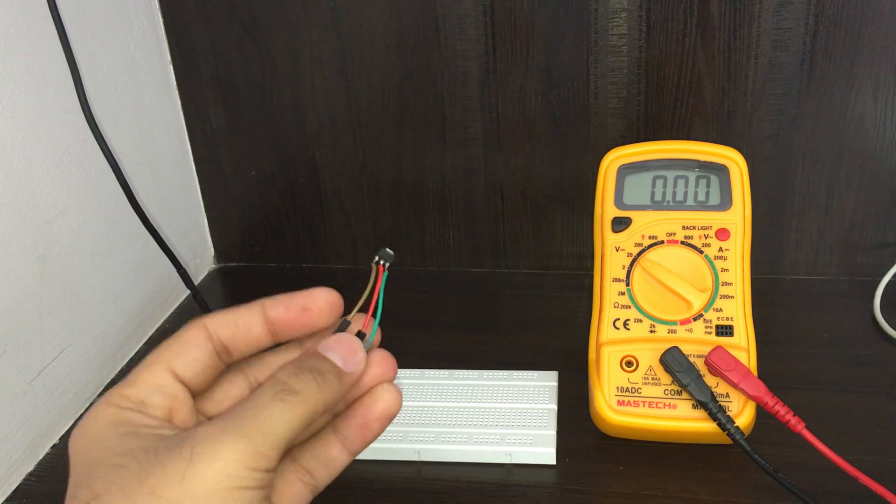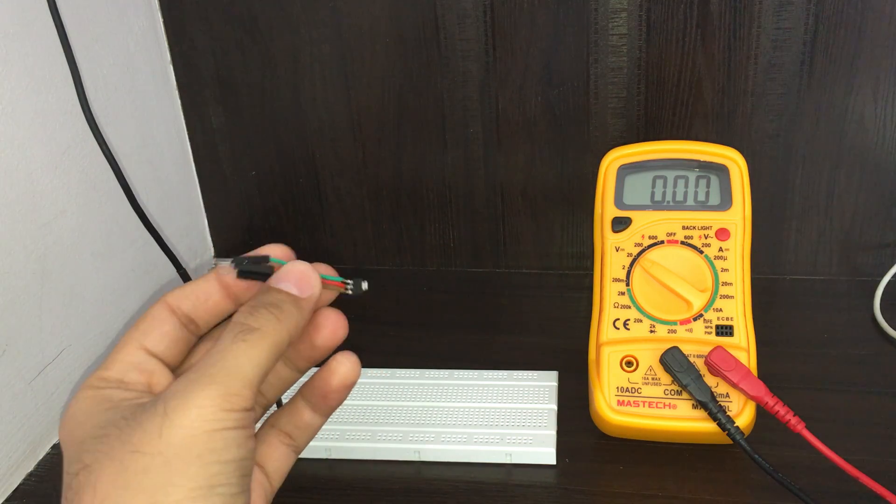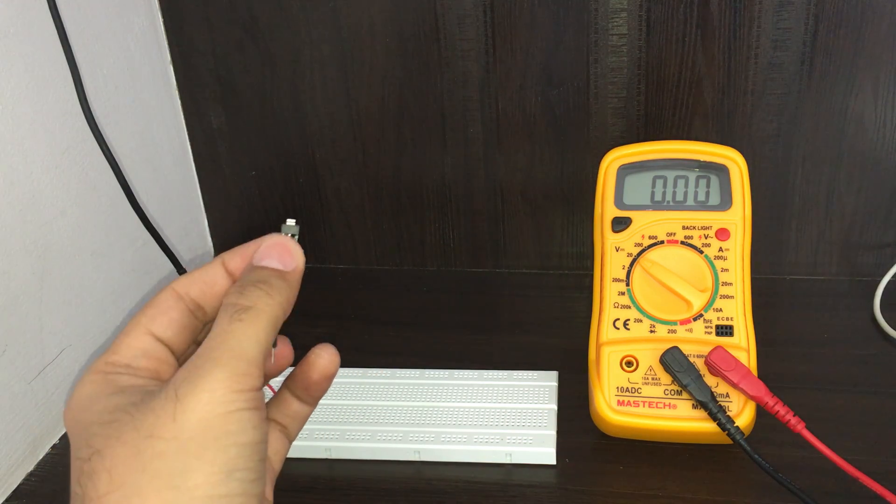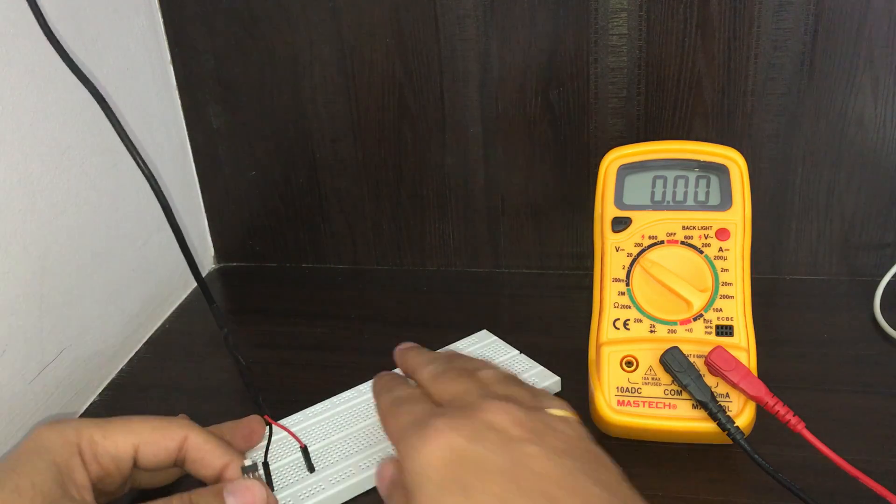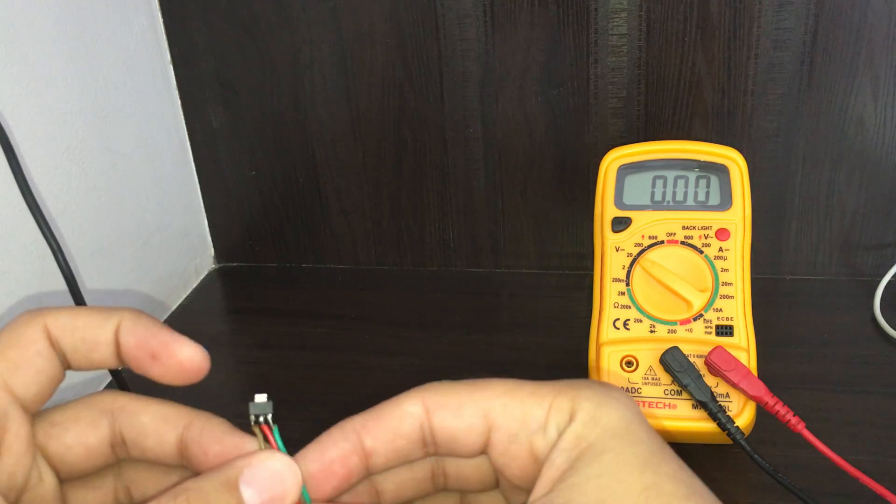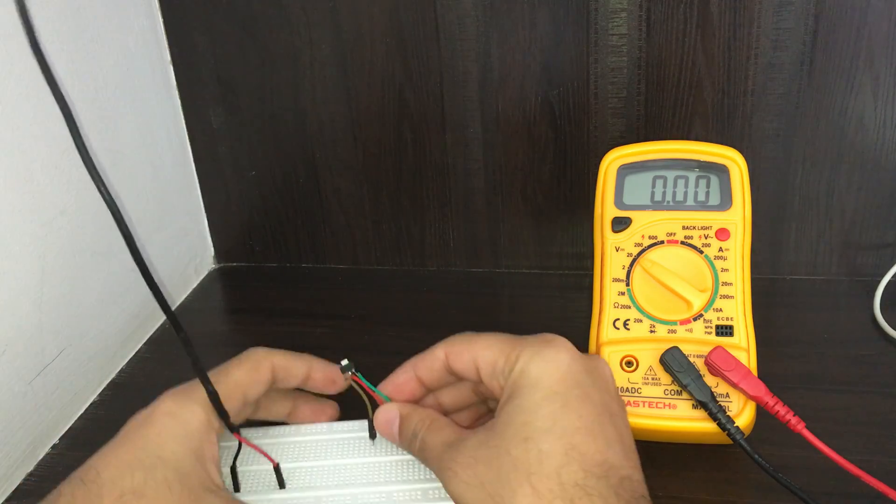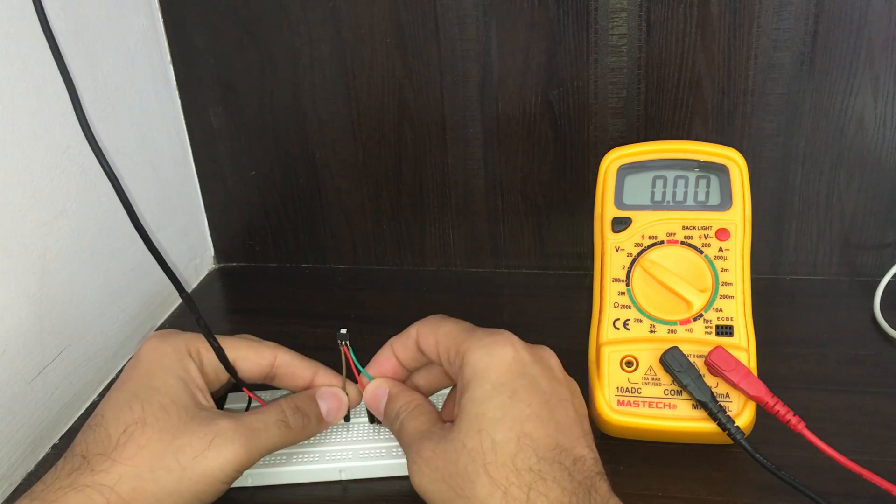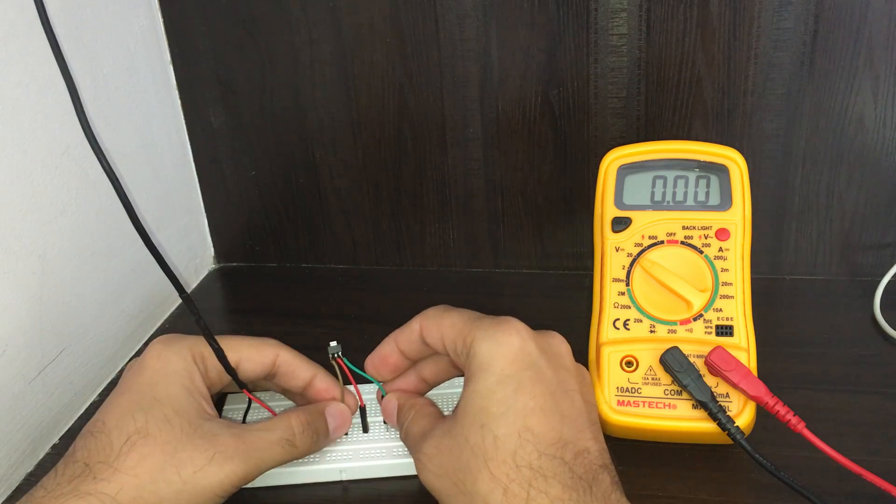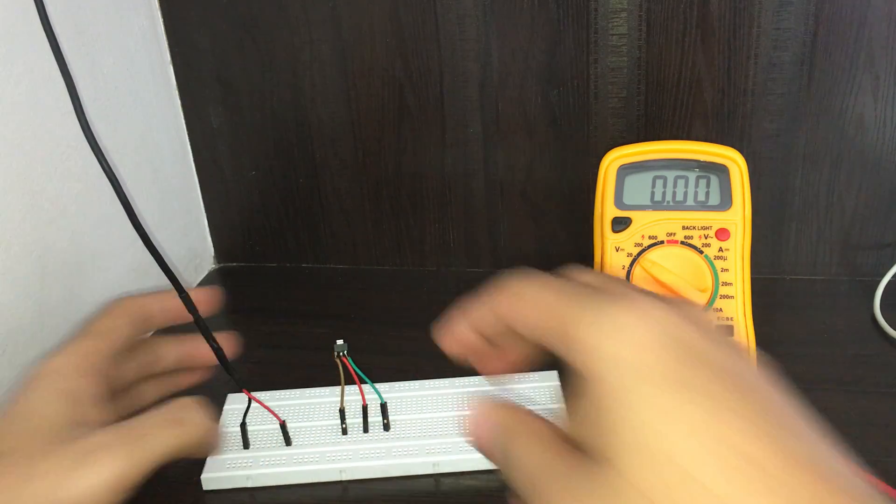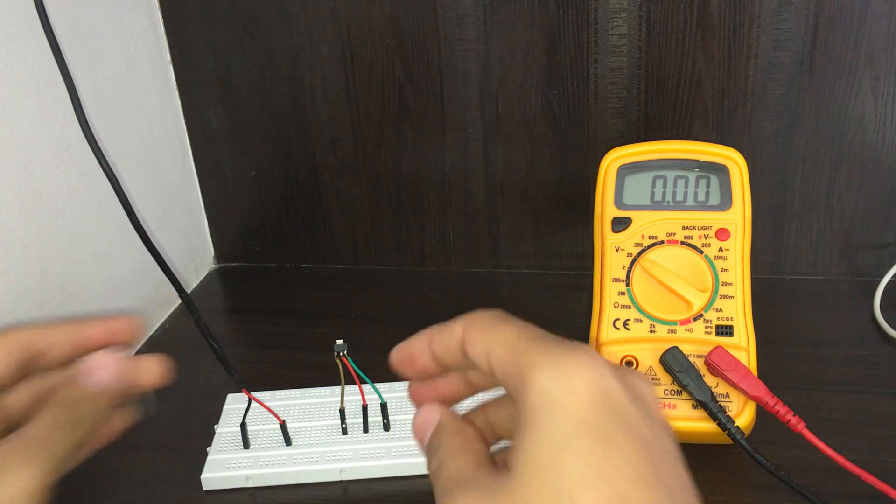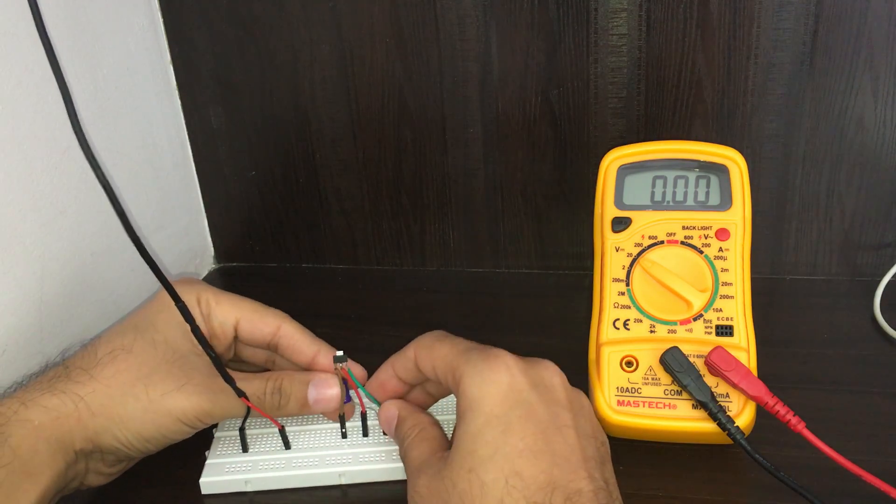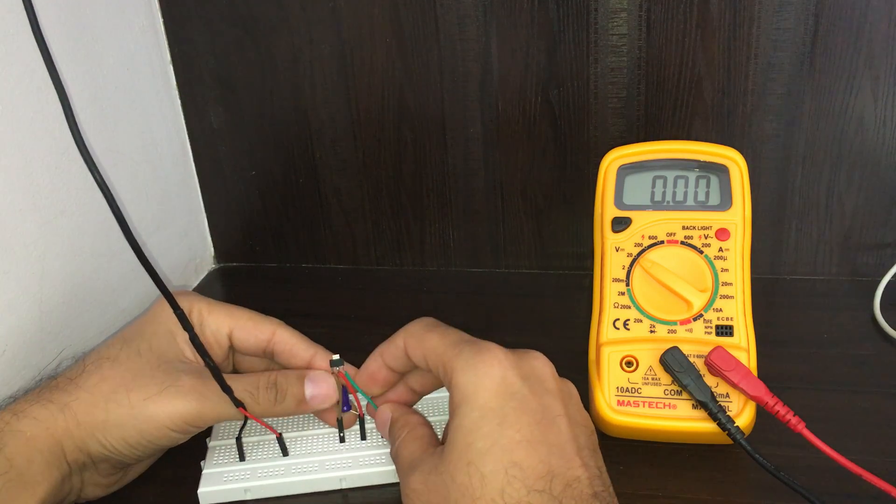To start with, I have soldered three pins with the module, this AMS1117, so that I can put it into the breadboard. Let's go ahead and make it. I'm going to put it here on the breadboard and I'm going to connect a 100 microfarad capacitor to the input line.